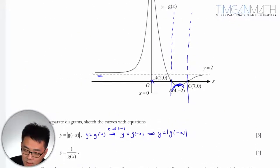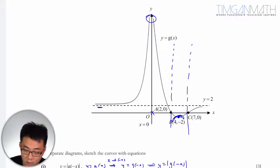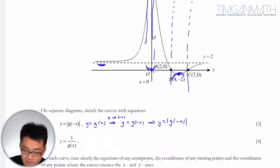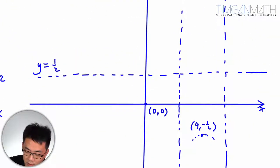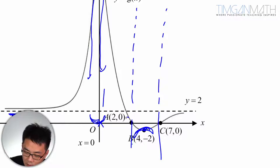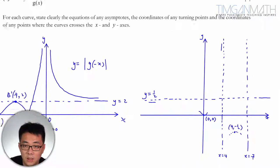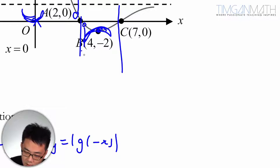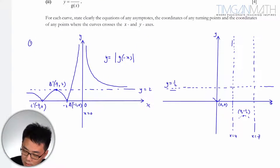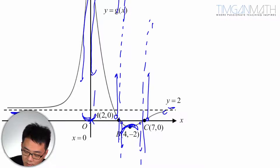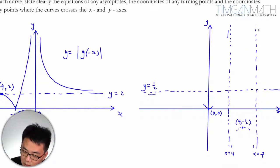Where the curve meets from both ends, there will be a minimum point. When the original approached from the top, the reciprocal approaches from bottom. Near the asymptote at x equals 4, the curve goes to infinity on one side and negative infinity on the other. Similarly near x equals 7, it goes to negative infinity then approaches from below.